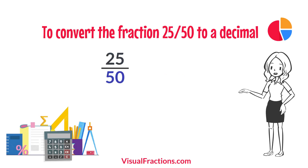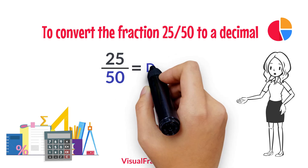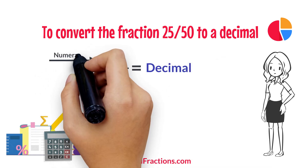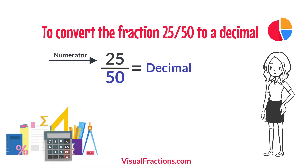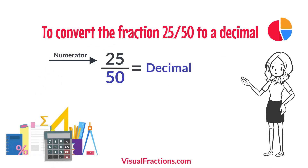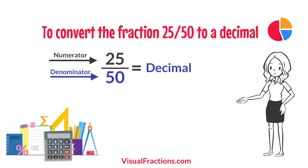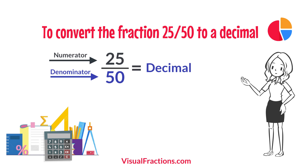To convert the fraction 25 50ths to a decimal, all we need to do is divide the numerator, the top number, by the denominator, the bottom number. So, we simply divide 25 by 50.